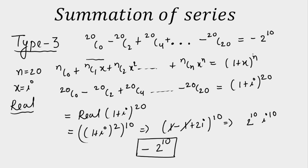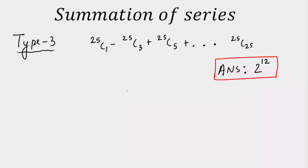Let's solve one more Type 3 question: 25C1 − 25C3 + 25C5 − … + 25C25. Notice the lower index is odd and there are alternate negative-positive signs. Feel free to pause and try this question — the answer is provided.